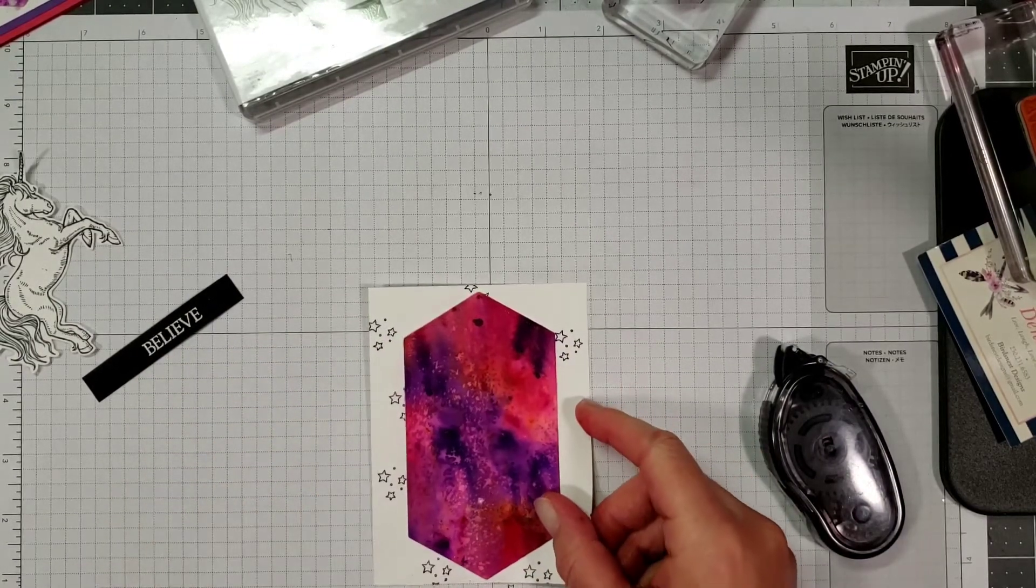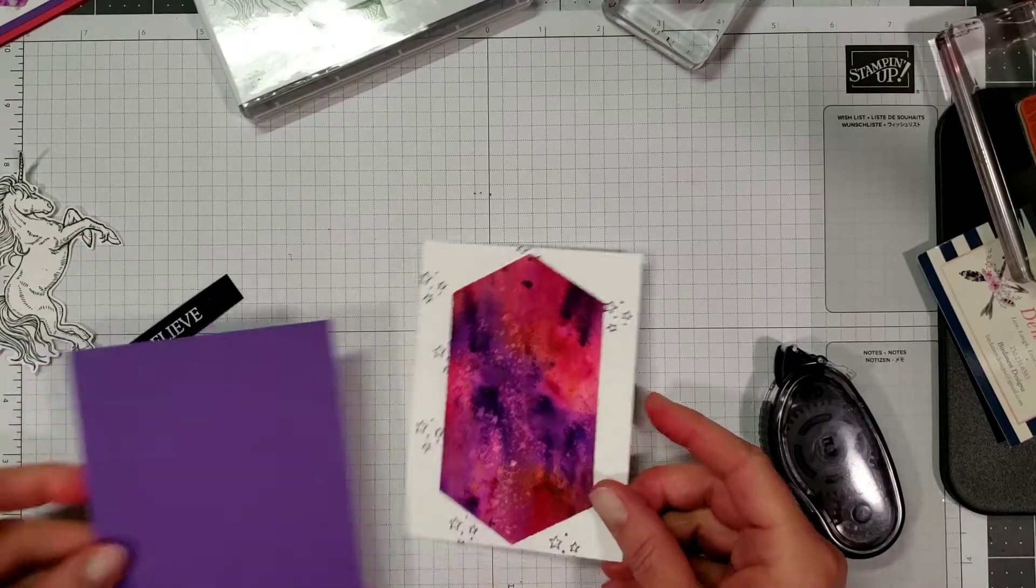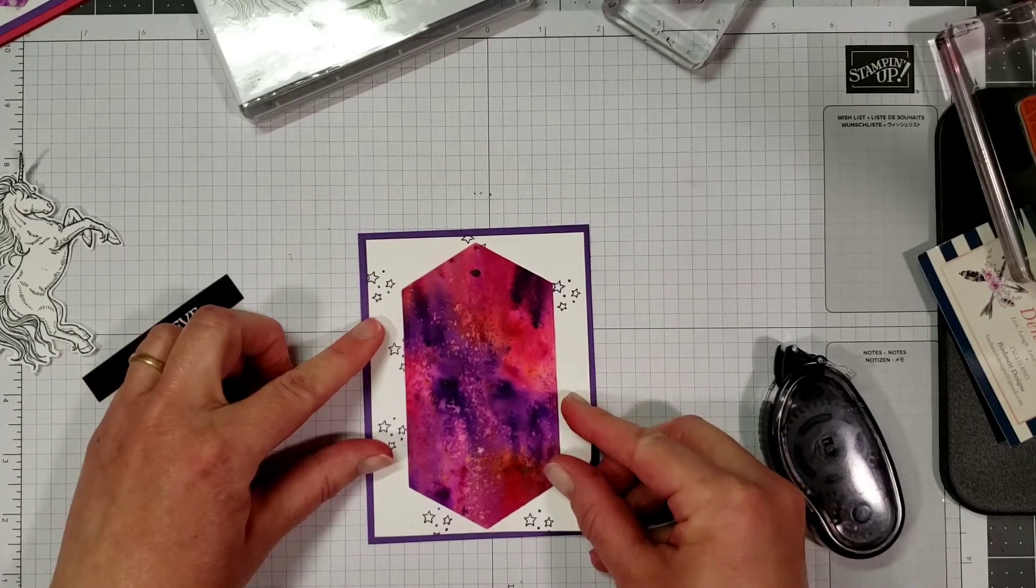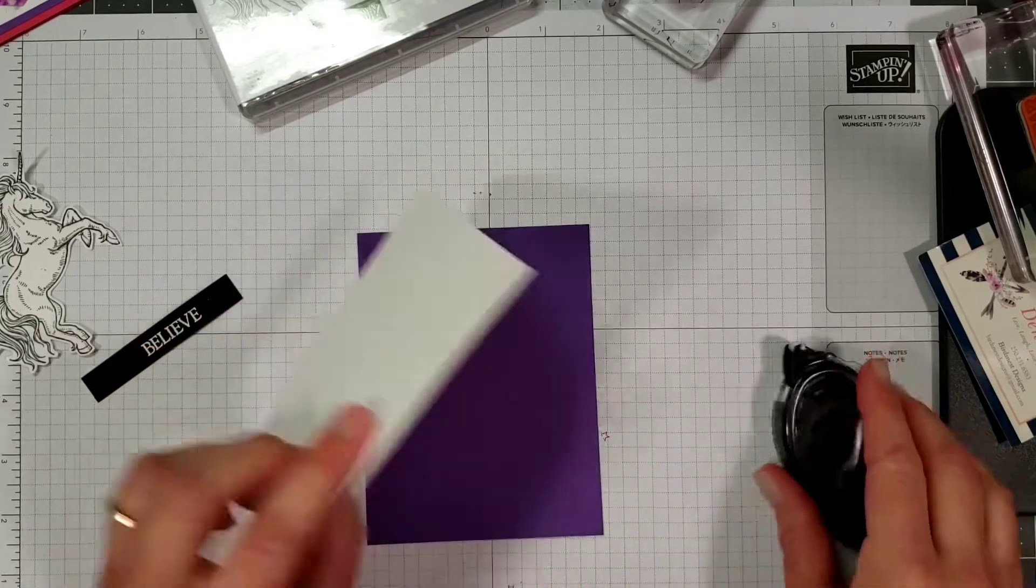Next we're going to put it onto our gorgeous grape next layer which is four by five and a quarter, and that's just going to sit right on top there.